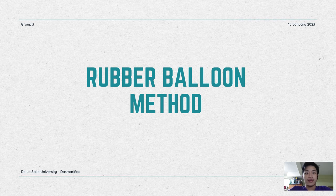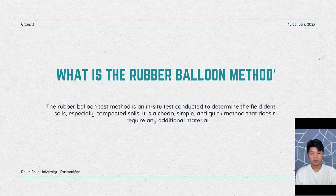Good day! We are group 3 presenting the rubber balloon method. The rubber balloon method is a common method to find the soil's field density. It is a cheap, simple, and quick method that does not require any additional material.